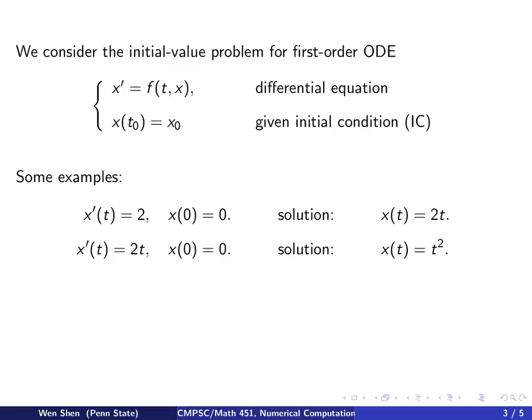Another example: x prime of t equals to 2t and x(0) equal to 0. You can integrate both sides, and you get an arbitrary integration constant, t squared plus a constant c. Then you put in the initial condition that c is 0, and your solution is t squared.